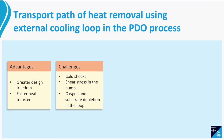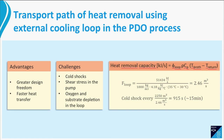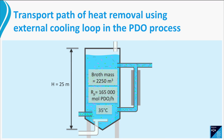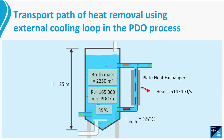For example, the cooling requirement of the fermentation of glucose to 1,3-propanediol — the so-called PDO process — is approximately 51 MJ per second. Using this value we are able to calculate all the key design elements, including the required volume flow rate through the cooling loop. Assuming a temperature difference of 5 degrees over the loop, a cooling water flow of 2.46 m³ per second is needed. On average, the organisms pass through the loop every 15 minutes, although some cells may pass more frequently and others only incidentally.